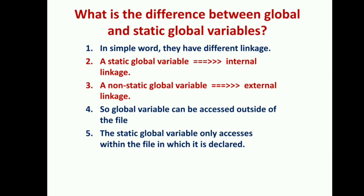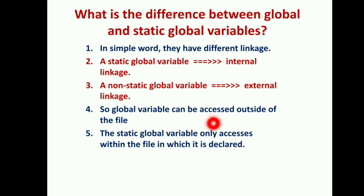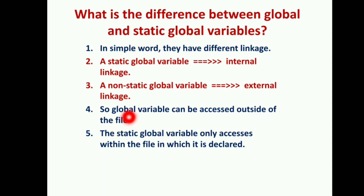What is the difference between global and static variables? In simple words, they have different linkage. A static global variable has internal linkage, while a non-static global variable has external linkage. Linkage determines whether a variable can be accessed outside of the file. A static global variable is accessed only within the particular file, while a global variable can be accessed from one file to another.